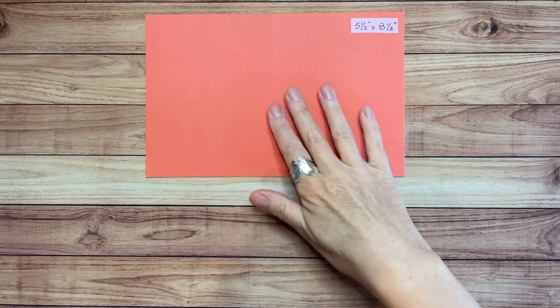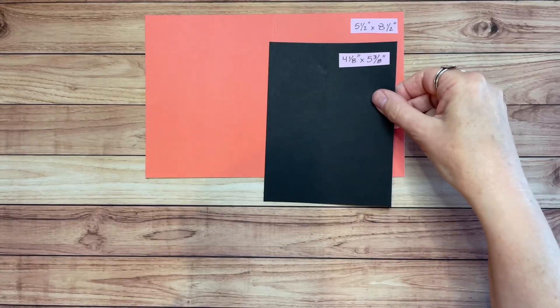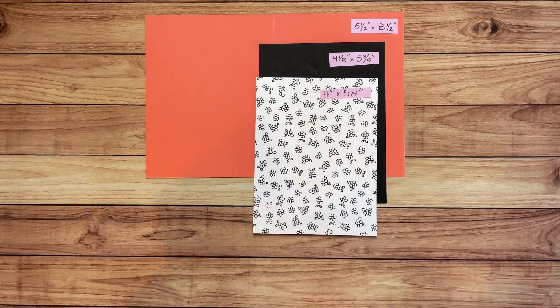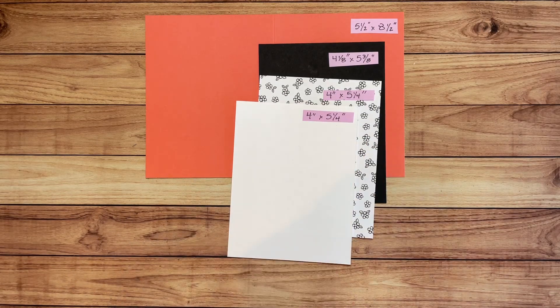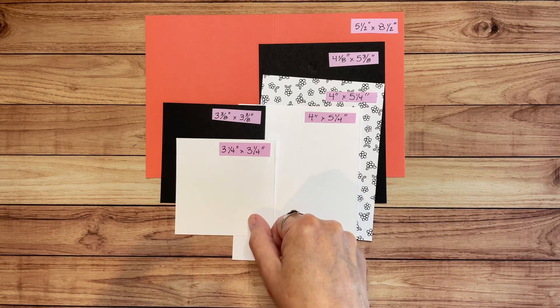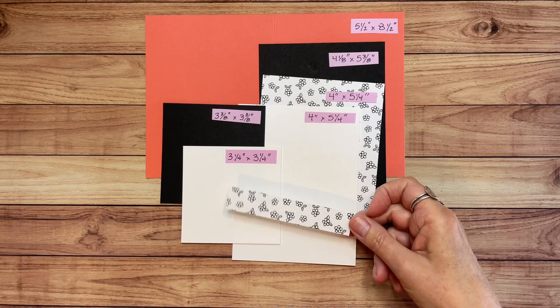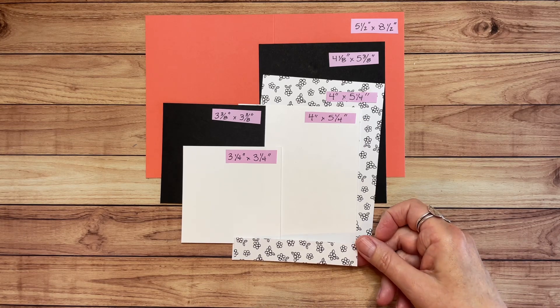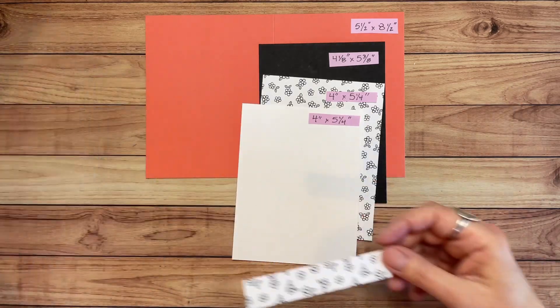Here's what you need to make this card. This is a piece of Calypso Coral cardstock measured five and a half by eight and a half and it's scored at four and a quarter. A piece of basic black cardstock, four and an eighth by five and three eighths. A piece of designer series paper that is four inches by five and a quarter inches. The same size, four inches by five and a quarter inches of basic white. Another piece of the basic black that is three and three eighths by three and three eighths. So it's a perfect square. And then a piece of white that is three and a quarter by three and a quarter. And then last, I just have this little strip. It is four inches wide. It's going to go on the inside of my card.